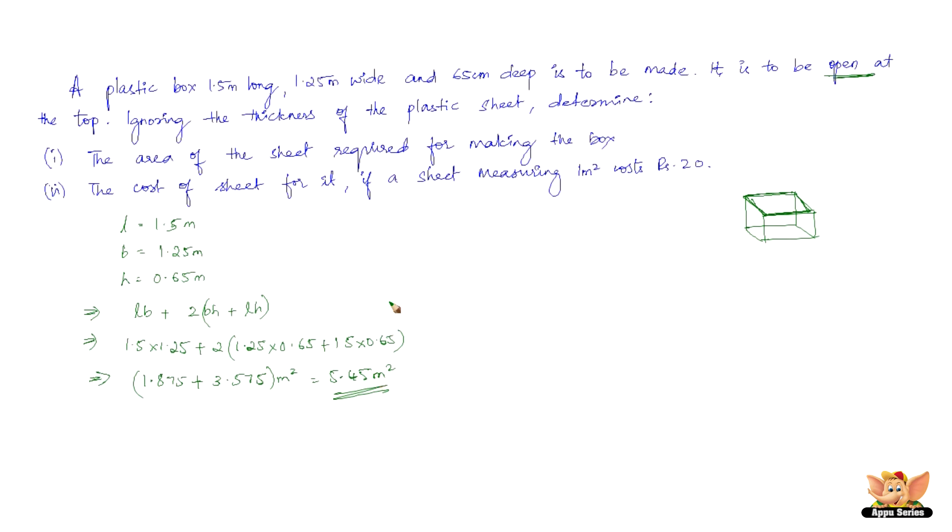Now, the cost of the sheet, if a sheet measuring 1 meter square costs rupees 20. Now, 1 meter square costs rupees 20. So, how much would 5.45 meters square cost? Simple, 5.45 into 20, which is rupees 109. So, the cost of sheet for it, if a sheet measuring 1 meter square costs rupees 20, is rupees 109.